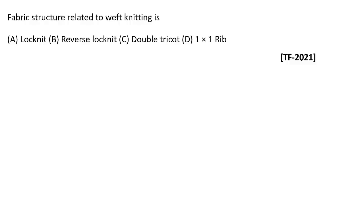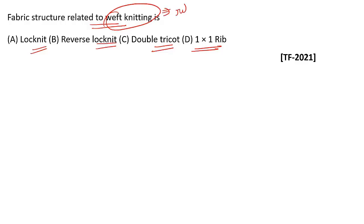This question says the fabric structure related to weft knitting is lock knit, reverse lock knit, double tricot, and one cross one rib. In weft knitting, the fabric structure that is related is rib fabric, so one cross one rib is best suitable for this.